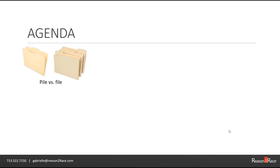Moving straight into our agenda, we're going to talk about five different topics. The first topic is pile versus file. With this topic, we'll discuss how you manage the archiving of your emails. There are two schools of thought: having just one pile — one folder with everything in it — and having many files where you file your emails. I'll share what I've done and give you the pros and cons of how it's been really useful for me working in Outlook.